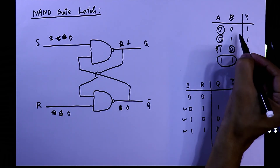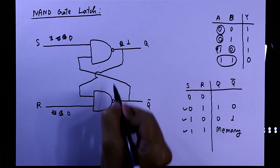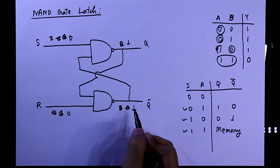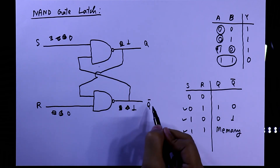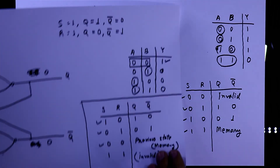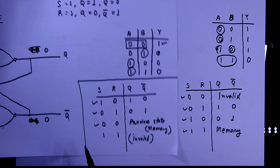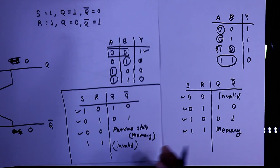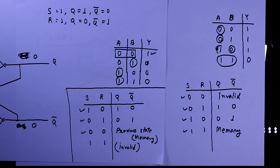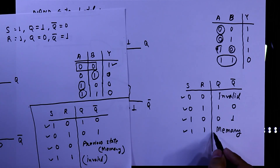When both inputs are 0, any input of 0 gives output 1 — meaning both outputs would be 1, but Q and Q-bar must be opposite, so this is invalid. From the truth table, we can confirm that the NOR gate latch and NAND gate latch are opposite to each other.